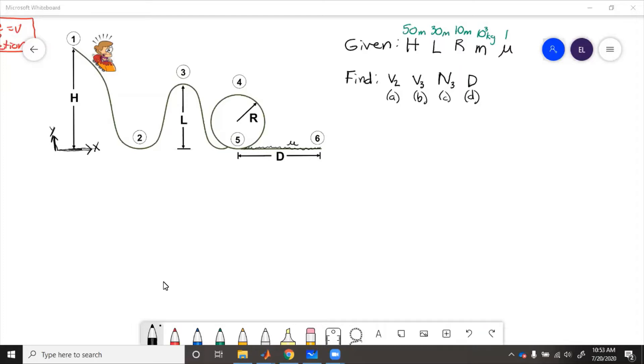We'll start out from one to two. We know that energy is conserved. So here we'll have energy at one equals energy at two. Potential energy at one equals kinetic energy at two. At state one, it's all potential, at two, it's all kinetic.